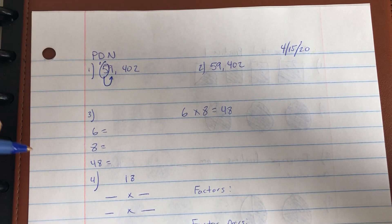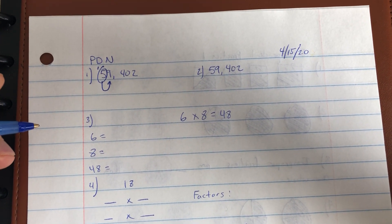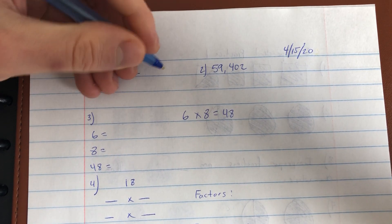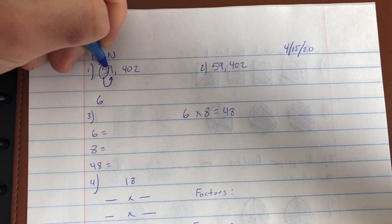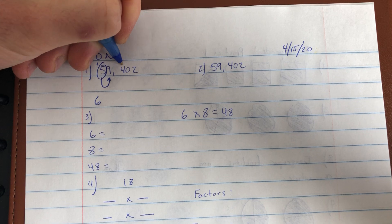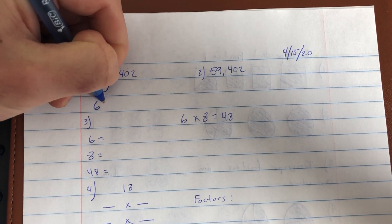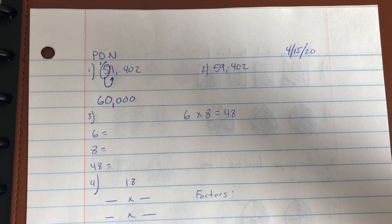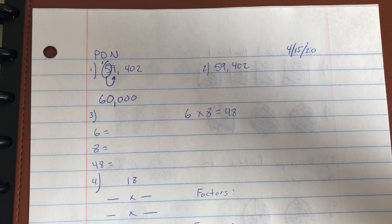Nine is greater than five, so I round up. I'm gonna put a little one right here above my circle digit to remind me that I round up. When I round up, my circle digit changes from five to six, and every digit after the thousands, hundreds, tens, and ones become a zero. 59,402 rounded to the nearest ten thousands is 60,000.